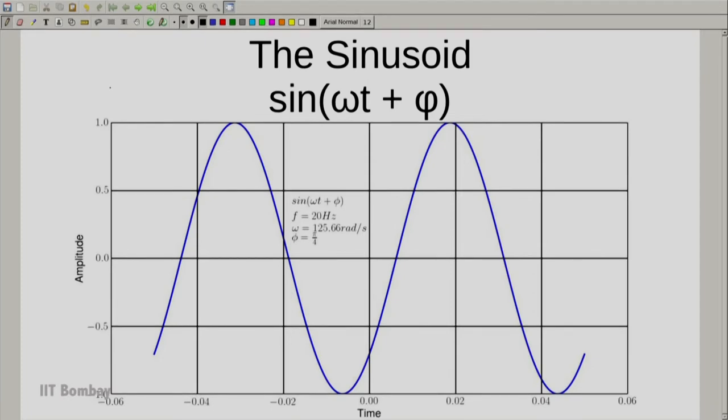You can see in the plot that we have a sinusoidal signal and symbolically it is written as sin of omega t plus phi and in these we see various quantities. So the first quantity we look at is omega and omega is called the angular frequency. It is measured in radians per second and in this particular case the angular frequency is 125.66 radians per second.